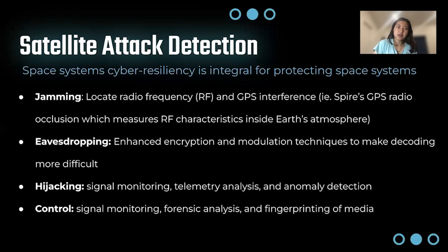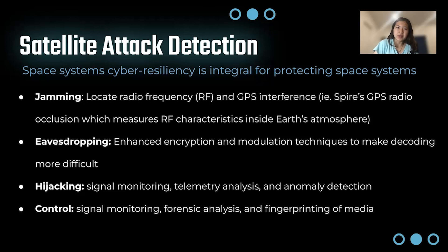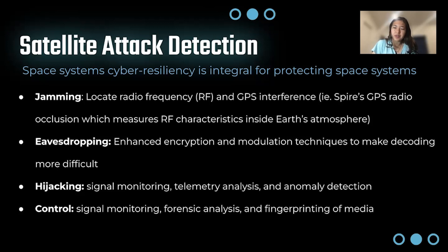A little bit about satellite attack detection. Space system cyber resiliency is really important for protecting space systems, and I listed out four of the most common attacks. For jamming, there are many ways you can detect an attack, but it typically involves locating a radio frequency, so performing some kind of signals intelligence. And then GPS interference — if there's an interference with GNSS satellites, for example, maybe the downlink is being jammed. Examples of this will be the SPARES GPS radio occlusion, which measures the RF characteristics inside the Earth's atmosphere.